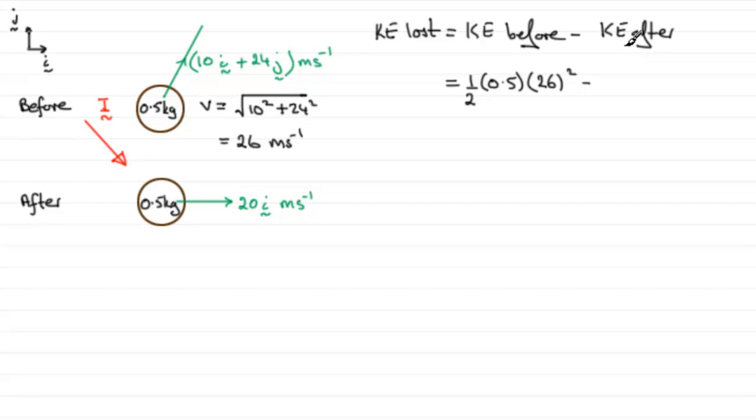And then minus the kinetic energy after, half the mass 0.5 times the speed after, well it was 20, so it's going to be 20 squared. And if you do that, it comes out at 69.